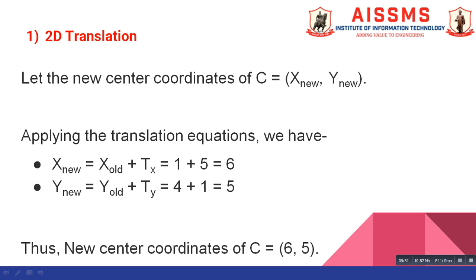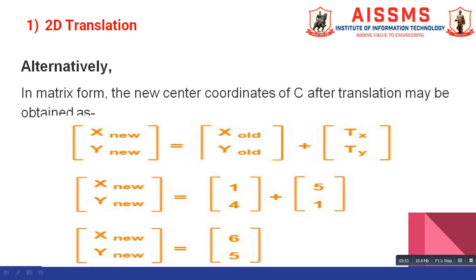In matrix form, the new center coordinates of C after translation can be obtained as follows. X new, Y new is equal to X old, Y old plus TX, TY. Values for X old and Y old are 1 and 4. And values for TX, TY are 5 and 1. So, after performing this calculation, we get X new, Y new coordinates are 6 and 5.